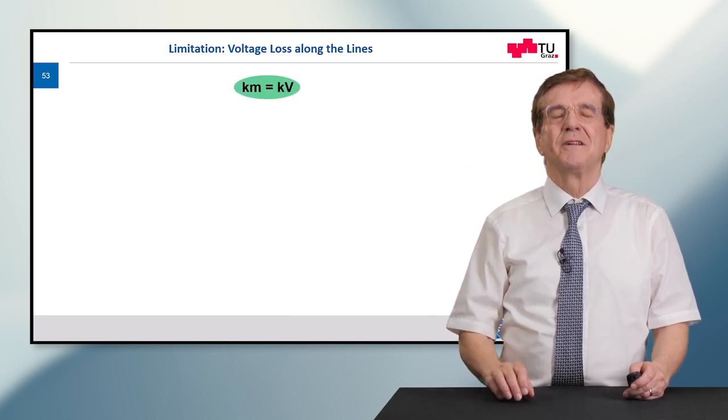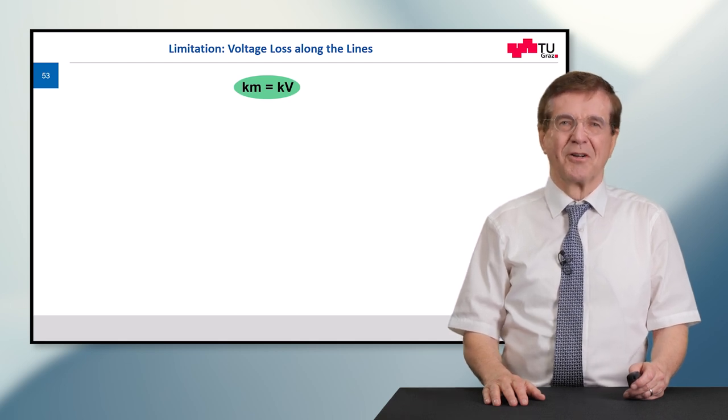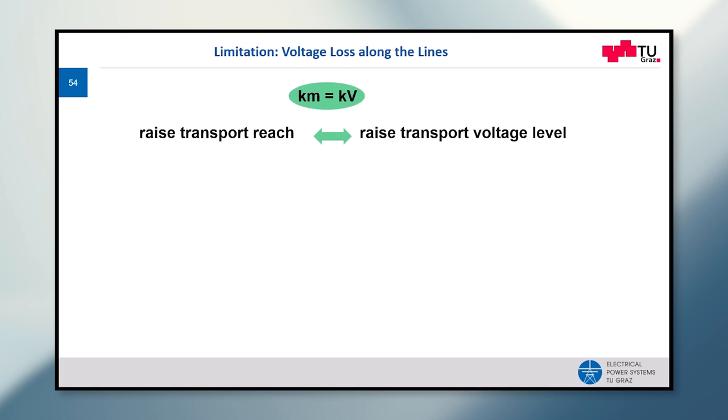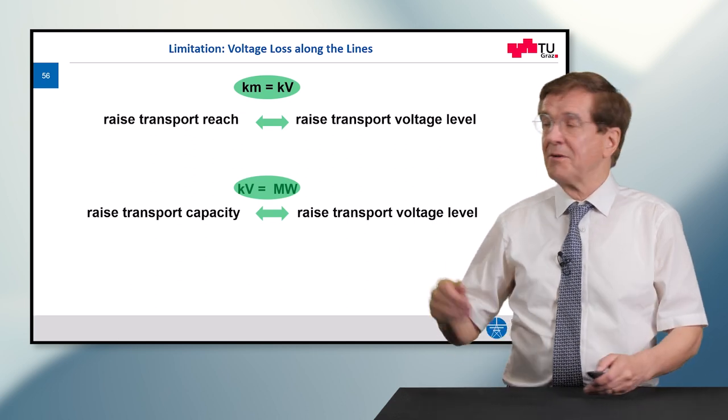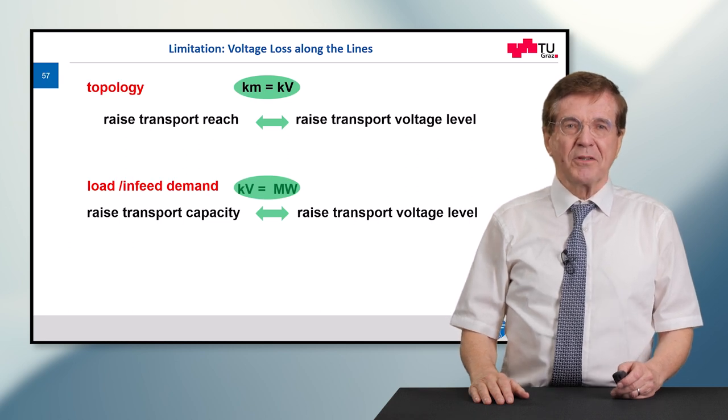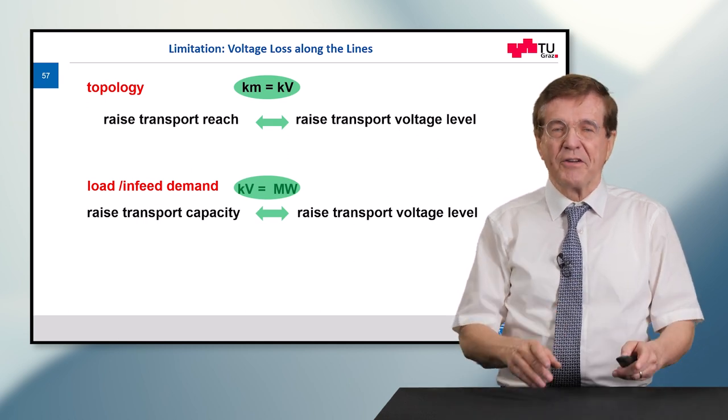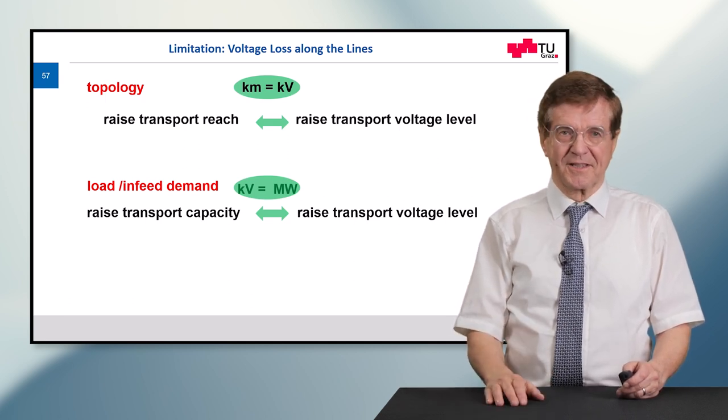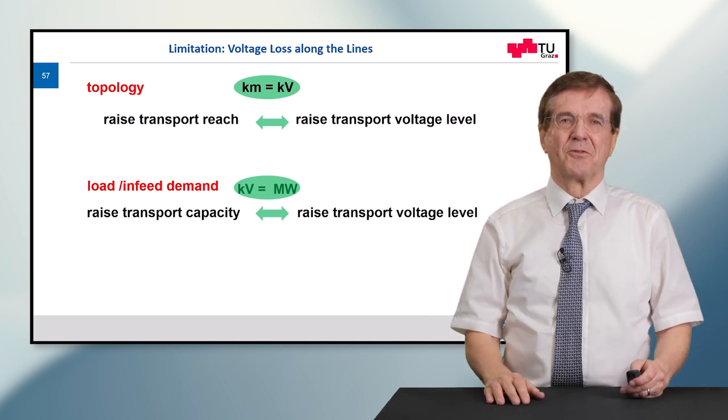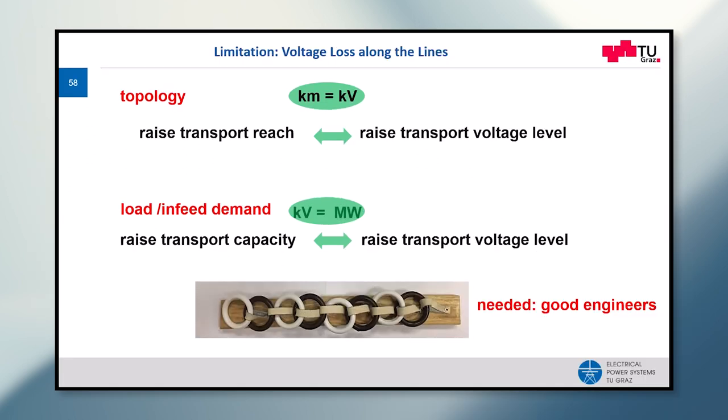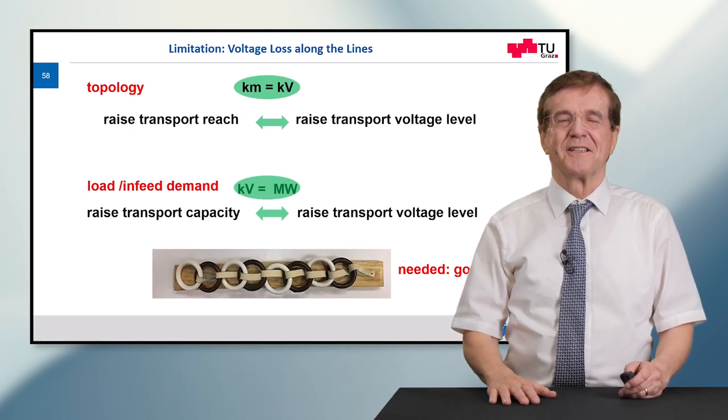Now we repeat these two crude but practical rules. So kilometers is more or less corresponding to the kilovolts, and this means to raise the transport reach we must raise the transport voltage level. The second line was already shown in the first part of my presentation. This is that the kilovolts corresponds to the megawatt that can be transported due to the current limitation. And here to raise the transport capacity we again must raise the transport voltage level. So the topology determines the distance over which this electric power has to be transported and the load and infeed demand determines the megawatts that are taken out of such a system. And to make these demands in a practical way applicable we need good engineers to solve this.